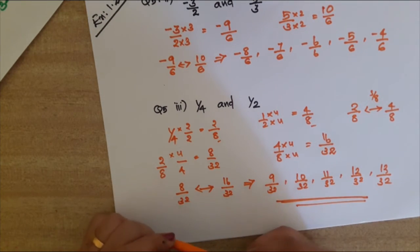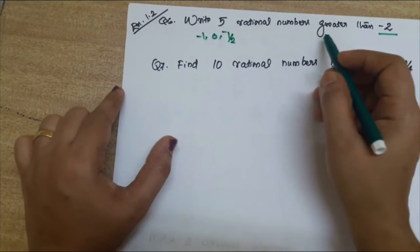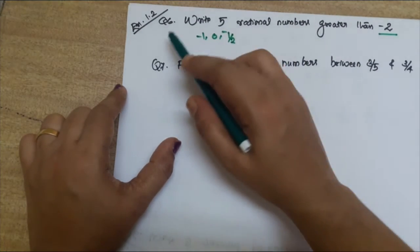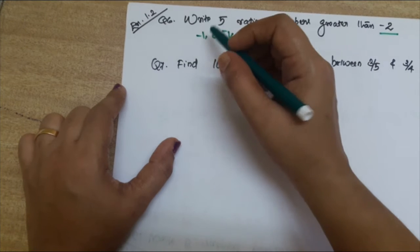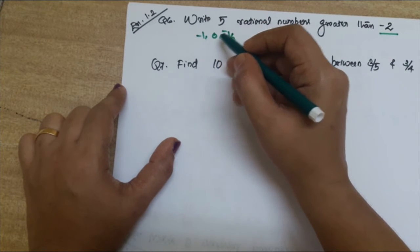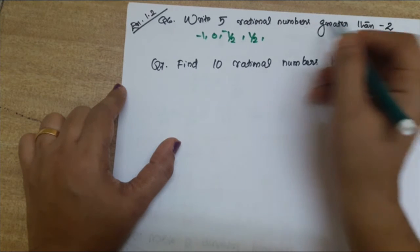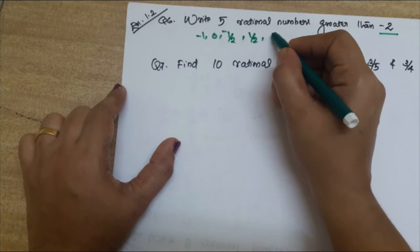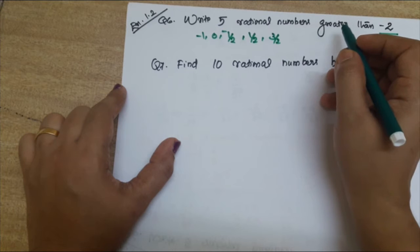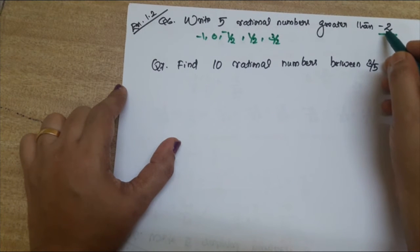Question 6: write five rational numbers greater than -2. We can write: -1, 0, -1/2, 1/2, 3/2 — any numbers greater than -2 will work.